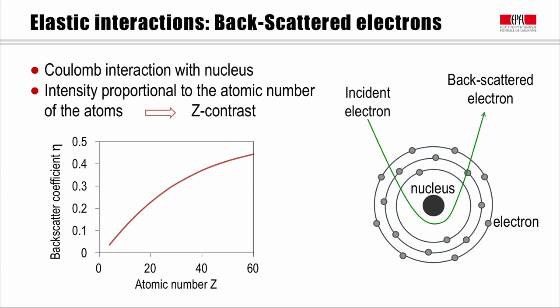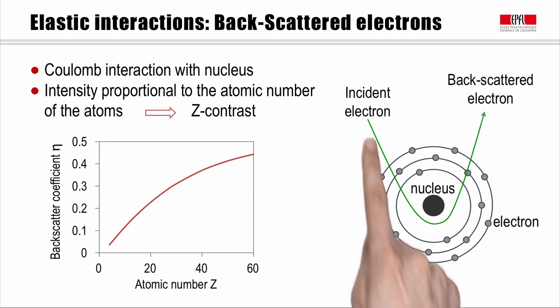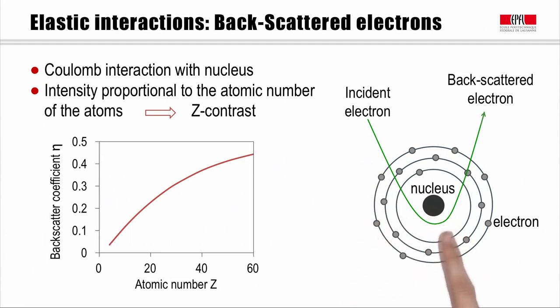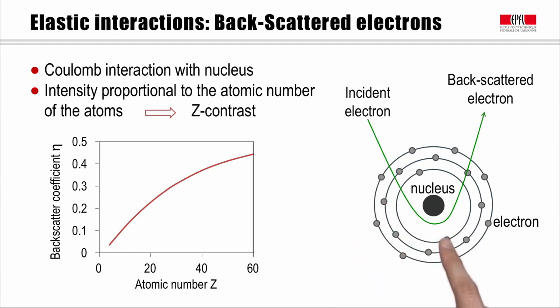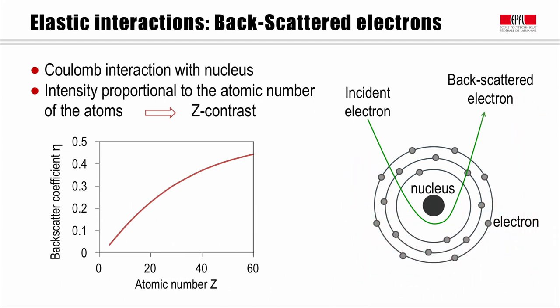Another kind of interaction occurs when an incident electron feels the Coulomb interaction with the nucleus of an atom of the sample. This incident electron is deviated because of this Coulomb interaction. If this deviation leads to high-angle diffusion, the electron can leave the surface and be collected by the backscattered electron detector. This electron scattered back is called a backscattered electron, or BSE. This interaction is almost elastic — there is almost no energy transfer — which means the energy of backscattered electrons is very similar to that of the incident beam.